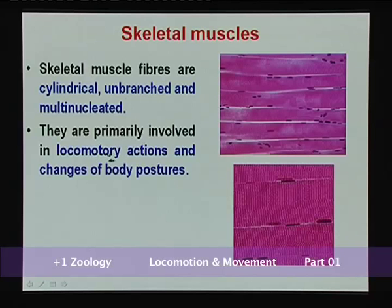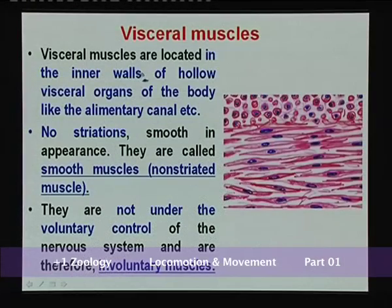The function of skeletal muscles is that they are primarily involved in locomotory actions and changes of body posture. Second, visceral muscles are located in the inner walls of hollow visceral organs of the body like the alimentary canal, blood vessels, and respiratory tract.